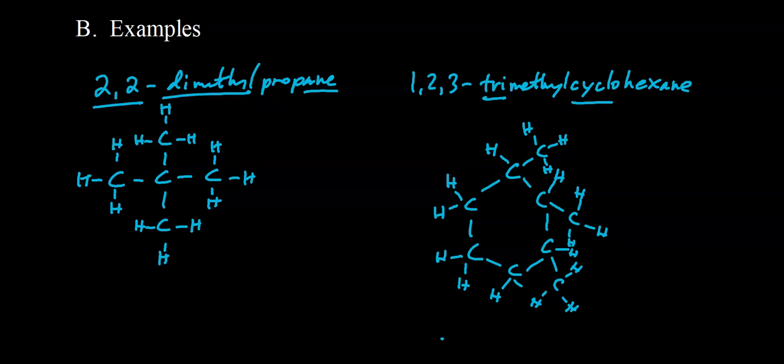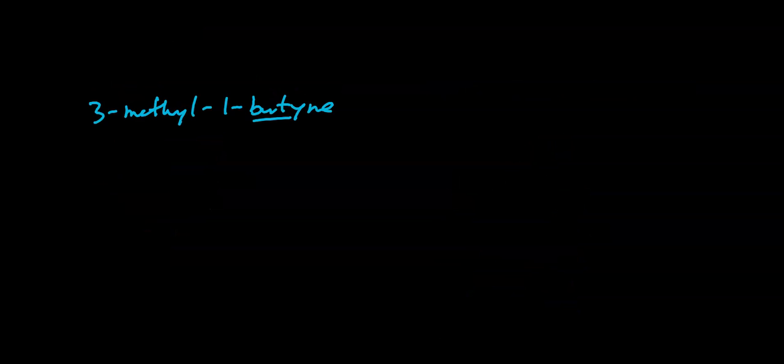All right, so continuing on, we end up with a structural formula for 1, 2, 3-trimethyl-cyclohexane. All of our carbons have four bonds. We're all good. Let's take a look at another example.